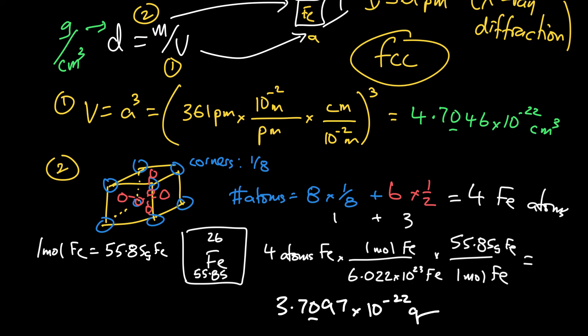So at this point here, I'm ready to calculate the density. So density is mass over volume. So I'm going to go to the lower left-hand corner here. And I'm going to plug in the mass. The mass I just calculated to be 3.7097 times 10 to the minus 22 of a gram. And the volume is a very small number, 4.7046 times 10 to the minus 22 of a centimeter cubed.